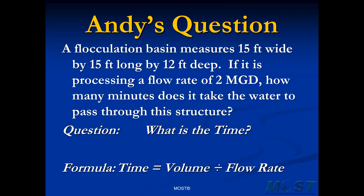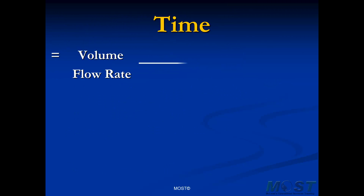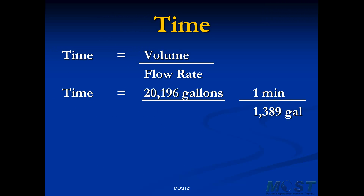Back to Andy's question. We have now found the volume of our flocculation basin and converted our flow rate into the proper units. So we can go to our final calculation — the calculation of time. That will be volume divided by flow rate: 20,196 gallons divided by 1,389 gallons per minute. Dividing by a fraction is the same as multiplying by that fraction inverted, so 1,389 gallons per minute becomes 1 minute per 1,389 gallons. The gallons cancel, time is left in minutes, and 20,196 divided by 1,389 gives us 14.5 minutes.